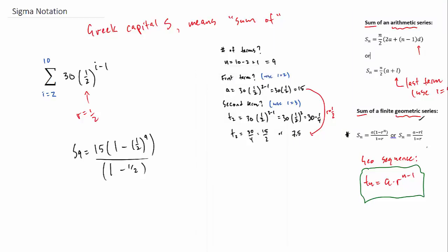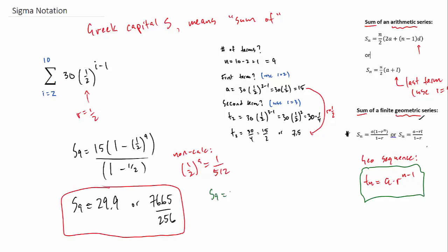And note that if you did do it by hand without a calculator, you can know that a half to the power of 9 is 1 over 512. And you could do this by hand and end up with a nice exact value as a fraction. For the most part, you'll usually use a calculator and get an approximate value for the sum.